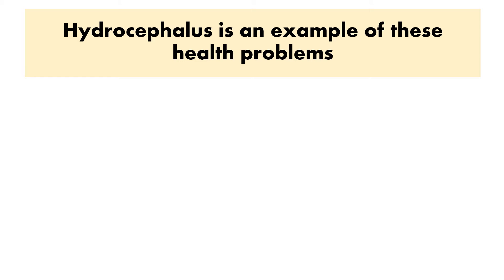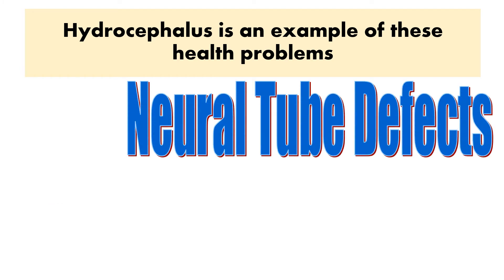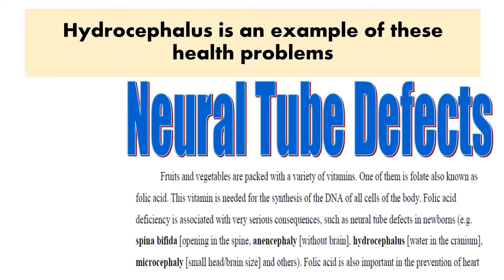Hydrocephalus is an example of these health problems — neural tube defects. Notice you have the information here: spina bifida, microcephaly, and anencephaly are all listed as types of neural tube defects.